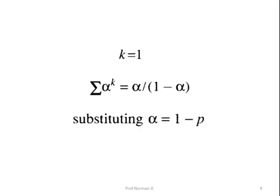Substituting alpha equals (1 minus p) and differentiating both sides of the resulting equation with respect to p, and multiplying throughout by minus p, we see that the mean time to failure equals 1 divided by p.